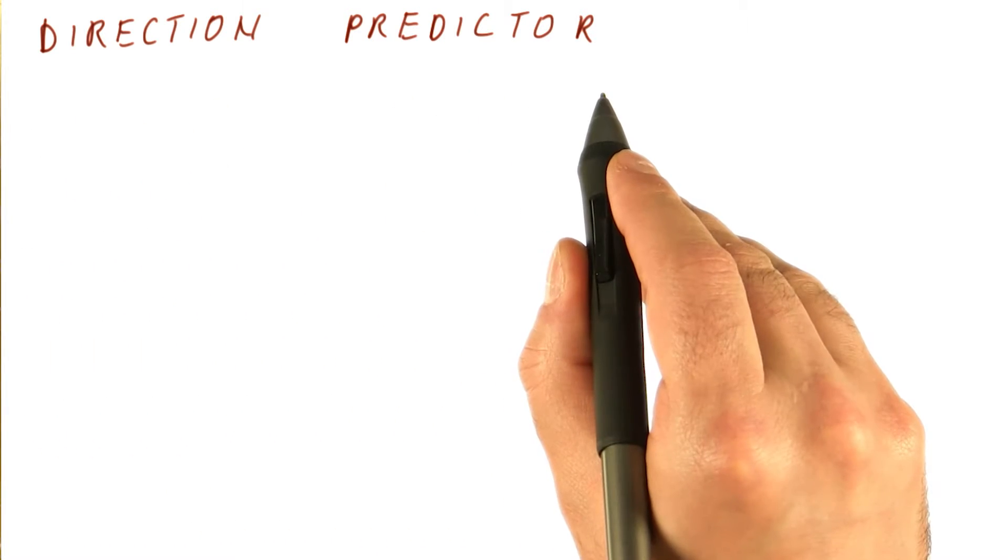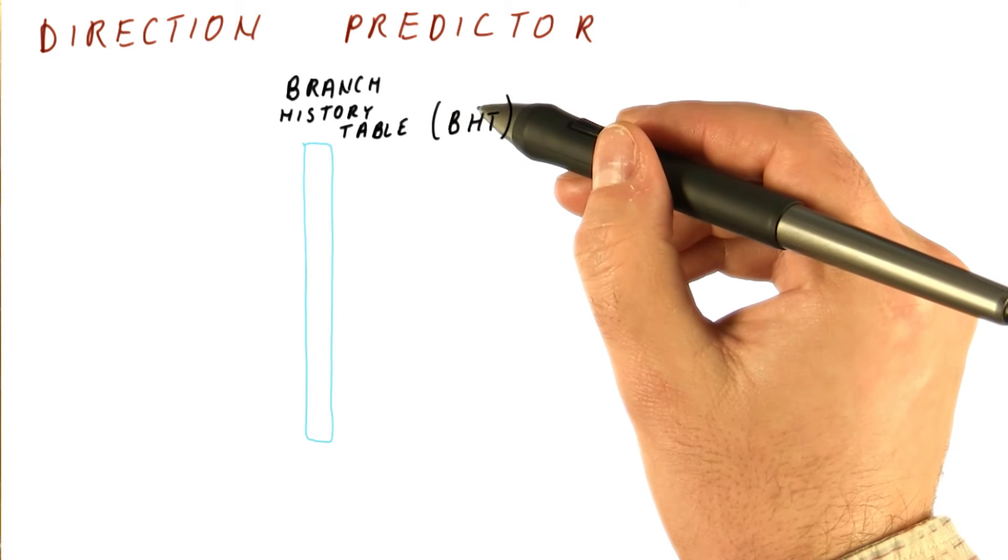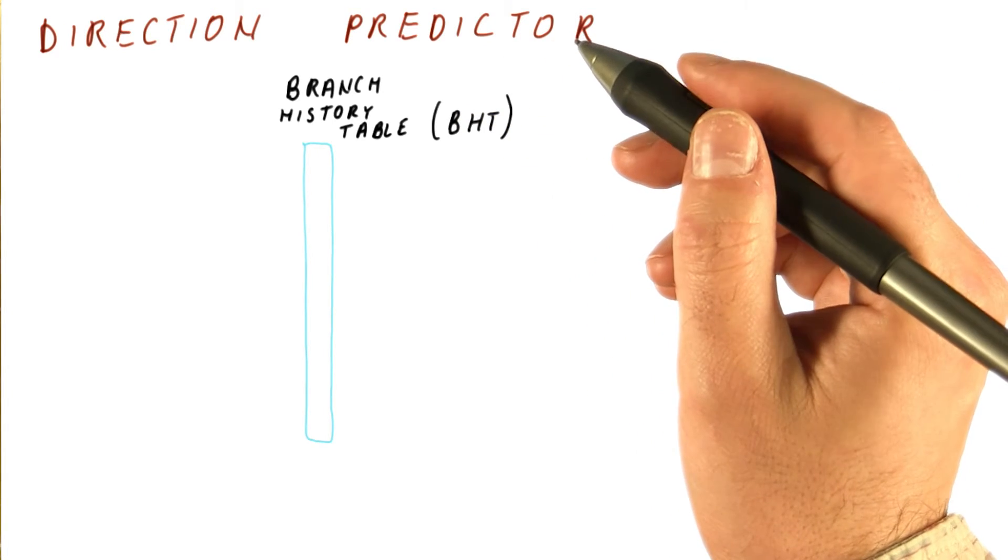So how are we going to do the direction prediction? We're going to have a table that we will call a branch history table, or BHT.